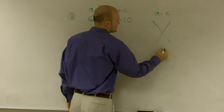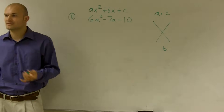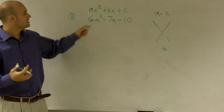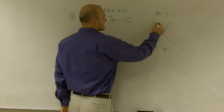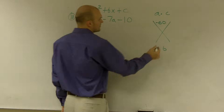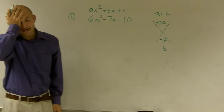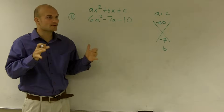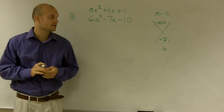I'm going to multiply a times c and b. This is a foolproof way to always check. So I do a times c: 6 times negative 10, which would be negative 60. And then my b is negative 7.